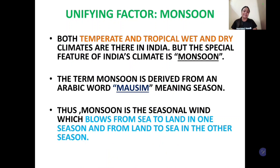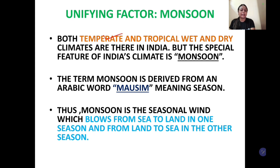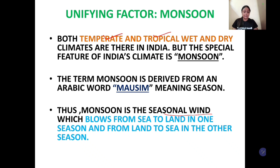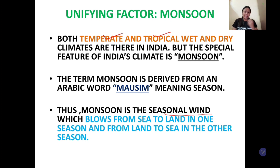Now let's come to the unifying factor — monsoon. Monsoon ka bahut important role hai India ke climate mein. Aur hum log kehte hain ki India is having a tropical monsoon climate, because in spite of experiencing temperate and tropical climate, monsoon which is a seasonal wind, has a very big impact — because monsoon poore country mein baarish lekar aata hai, alag-alag jagahon par, alag-alag samay par, but in a particular season. So it's a very important aspect.